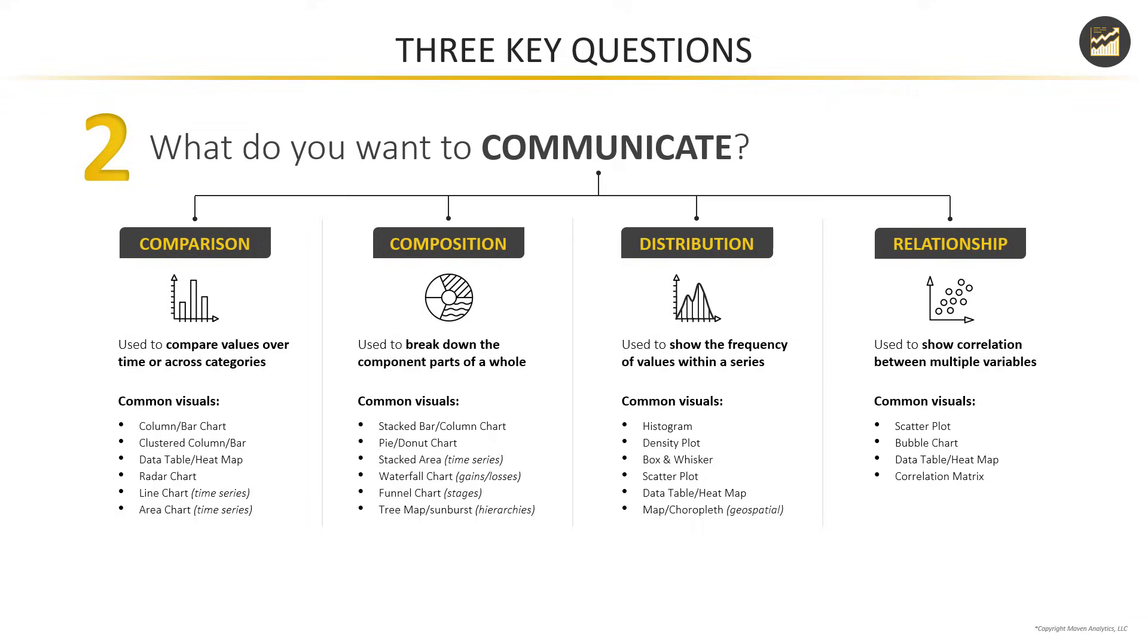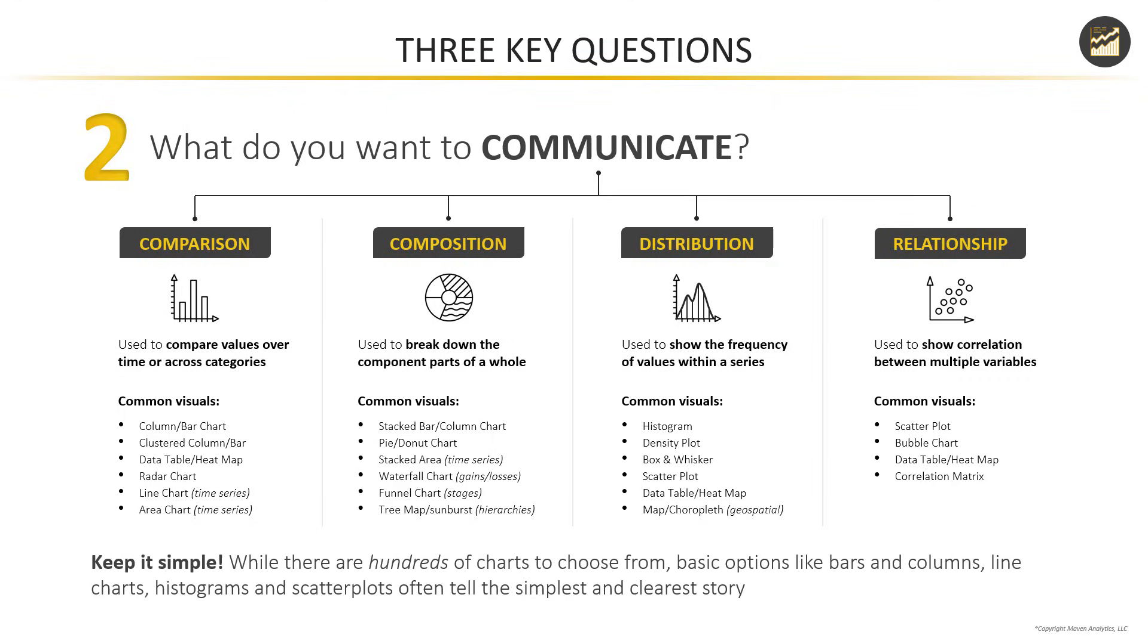I know this is a quick review and can feel a bit overwhelming talking about all these different chart types. How could you possibly know which one to choose for any given situation? The big takeaway here is to keep it simple. There are hundreds of charts, if not thousands of charts to choose from, but at the end of the day your basic tried and true options like bar charts, column charts, line charts, histogram, scatter plots are going to be a great fit in 90% of use cases. The reason they're tried and true is because they often do the best job telling the simplest and clearest story, which ultimately is the goal of data visualization.